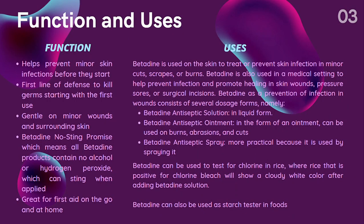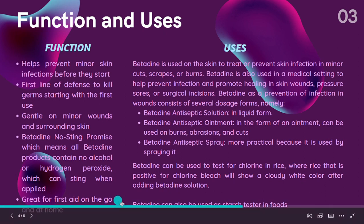On the third page we can see the functions and uses of Betadine. The functions of Betadine include: it helps prevent minor skin infections before they start; it is a first line of defense to kill germs starting with the first use; it is gentle on minor wounds and surrounding skin. Betadine also has a no-sting promise — all Betadine products contain no alcohol or hydrogen peroxide, which can sting when applied. It is great for first aid on the go or at home.